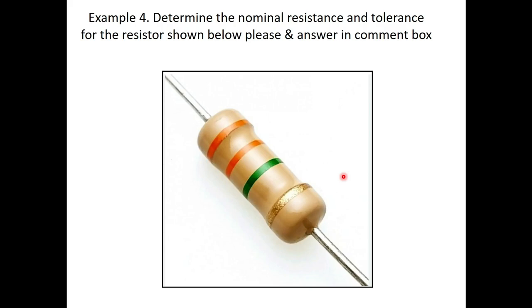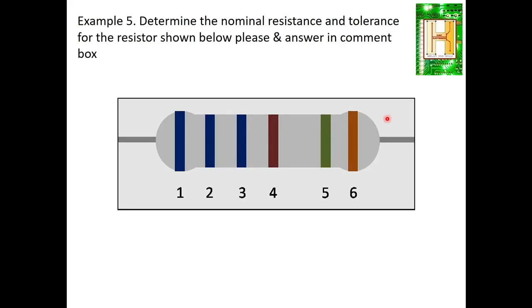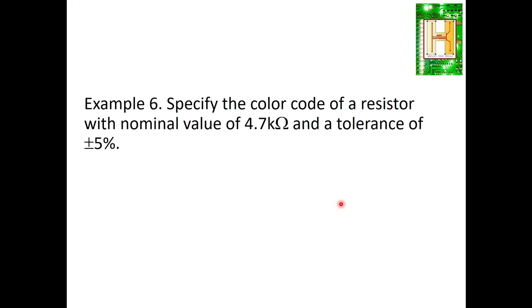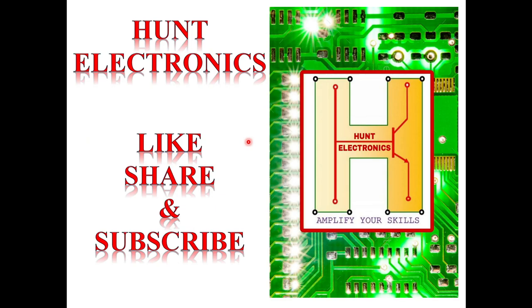Now here are exercises for you: determine the resistance value of the resistor shown in the image and comment your answer in the comment box. Also, determine the value of the six-band resistor shown and comment the answer. Additionally, decode the color code for a resistor with a value of 4.7kΩ and ±5% tolerance. I hope this technical session was valuable. Please like, share, and subscribe for more sessions like this. Thank you.